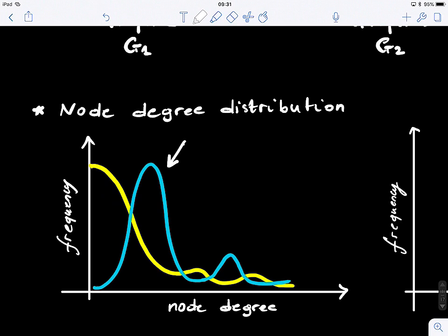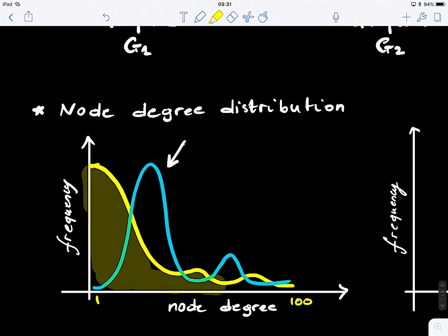We look at node degree starting from one up to, say, a hundred connections, and then we try to profile those. You can think of this as a histogram — we're just plotting the frequency and learning the profile of a graph, say graph G1. This is the profile of the first graph, and then you have a profile of a different graph. What do you notice by comparing these two profiles?